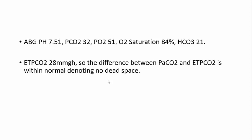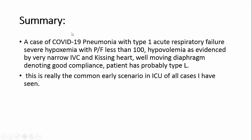Summary: a case of COVID-19 pneumonia with Type 1 acute respiratory failure, severe hypoxemia with P/F less than 100, hypovolemia evidenced by very narrow IVC, kissing heart, and good diaphragmatic movement denoting good compliance. Patient is probably L-type — the common early scenario in ICU. The difference between end-tidal CO2 and arterial CO2 is less than 5, meaning no significant vascular element. The main pathology is interstitial inflammation reflected by B-lines and a lung water score of 17.